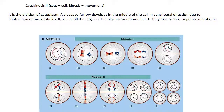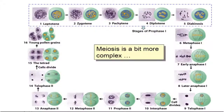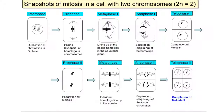Cytokinesis II is the division of cytoplasm: a cleavage furrow develops in the middle of the cell in a centripetal direction due to contraction of microtubules, occurring until the edges of the plasma membrane meet and fuse to form a separate membrane. Here is a pictorial representation of the meiotic different stages — a complete representation of meiosis I as well as meiosis II, showing bivalent and tetrad formation, and chromosome and chromatid division taking place in respective stages, including an example showing meiosis with two chromosomes.